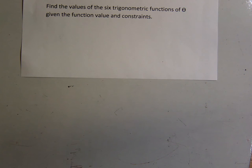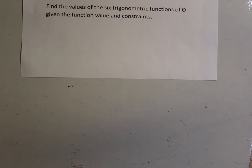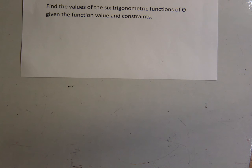Here's a particular type of problem that is on your homework for section 4-4 in our textbook, which is basically taking what we have learned about trig functions in the unit circle and applying it to some different types of problems. This one says: find the values of the six trigonometric functions of theta given the function value and constraints.